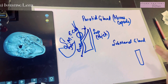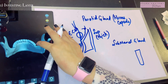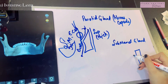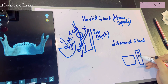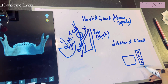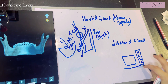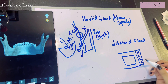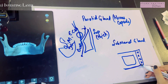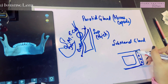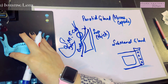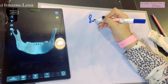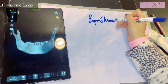Now let's talk about the submandibular gland. Viewing the mandible bone from the back, this is where the submandibular gland is kept. The investing layer of the deep fascia will have a superficial lamina lying below and a deep lamina lying on top of the gland. The superficial lamina is attached to the lower border of the body of the mandible, whereas the deep lamina is attached to the mylohyoid line.